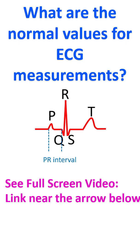So the PR interval is lower in children. The width of the QRS complex is another important measurement. Normally it is less than 0.12 seconds in an adult. A QRS complex of 0.12 seconds or 120 milliseconds or more is considered abnormal.